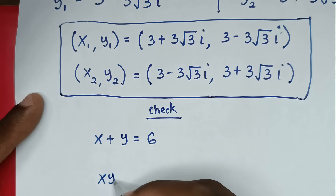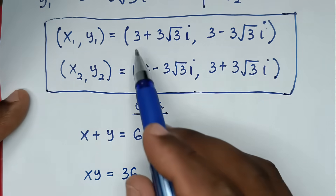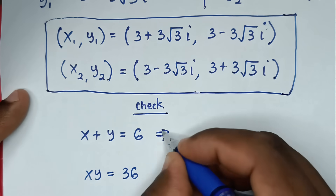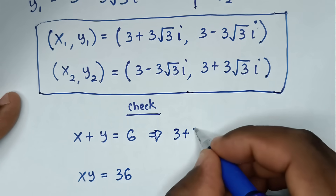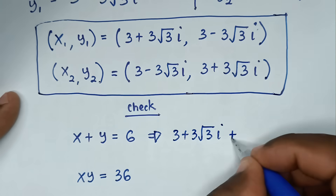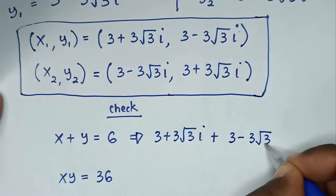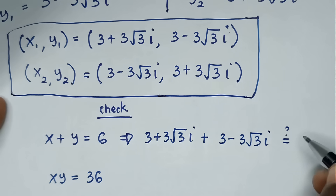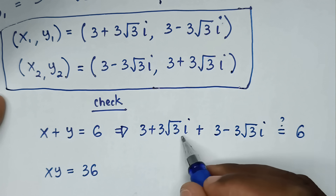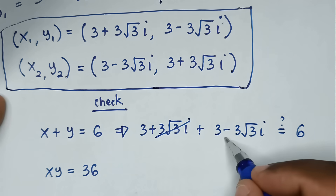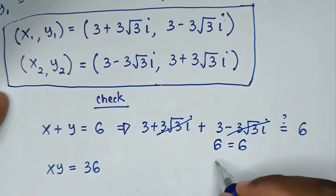And x times y is equal to 36. Checking with the first solution: x plus y equals 3 plus 3 square root of 3i, plus 3 minus 3 square root of 3i. The 3 square root of 3i terms cancel to 0, so 3 plus 3 is 6, equal to 6. Left side and right side are equal.